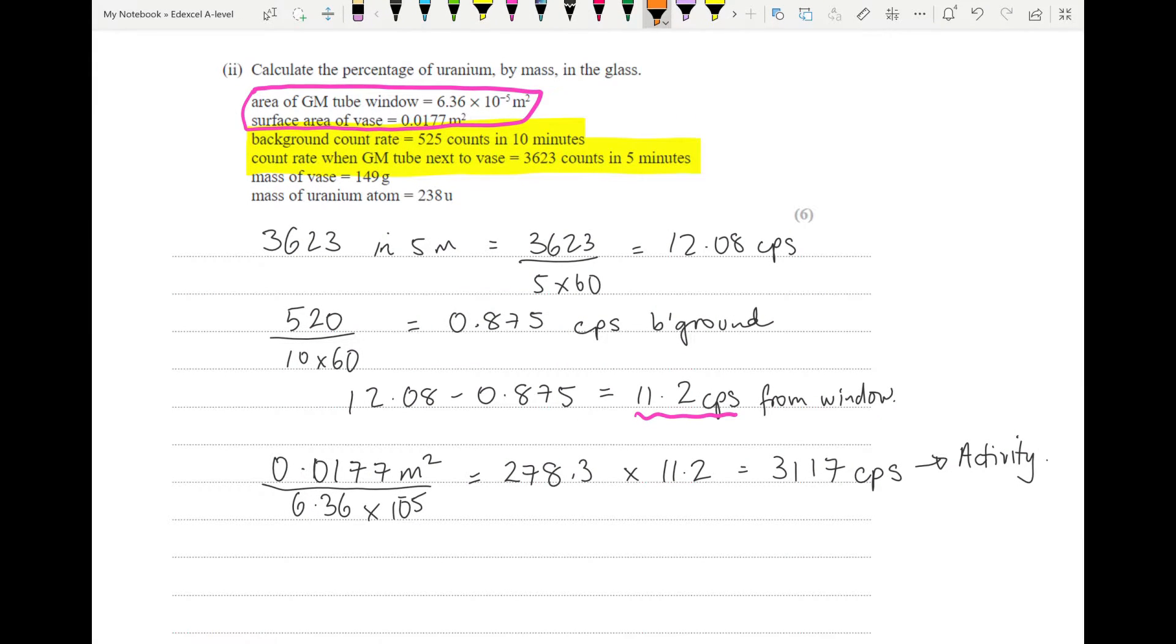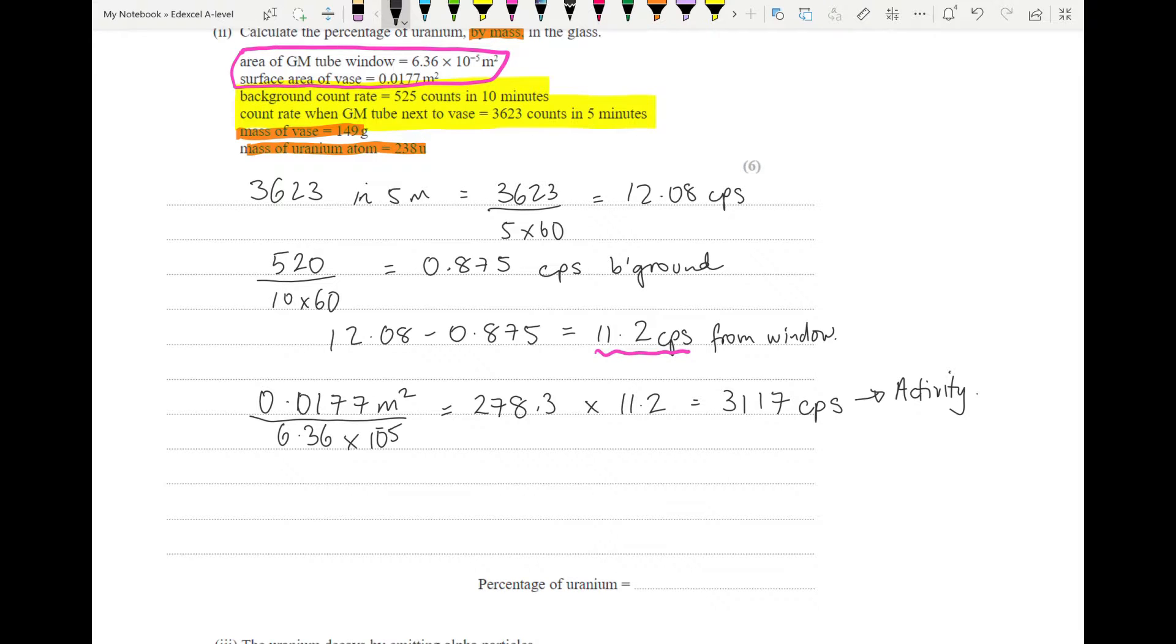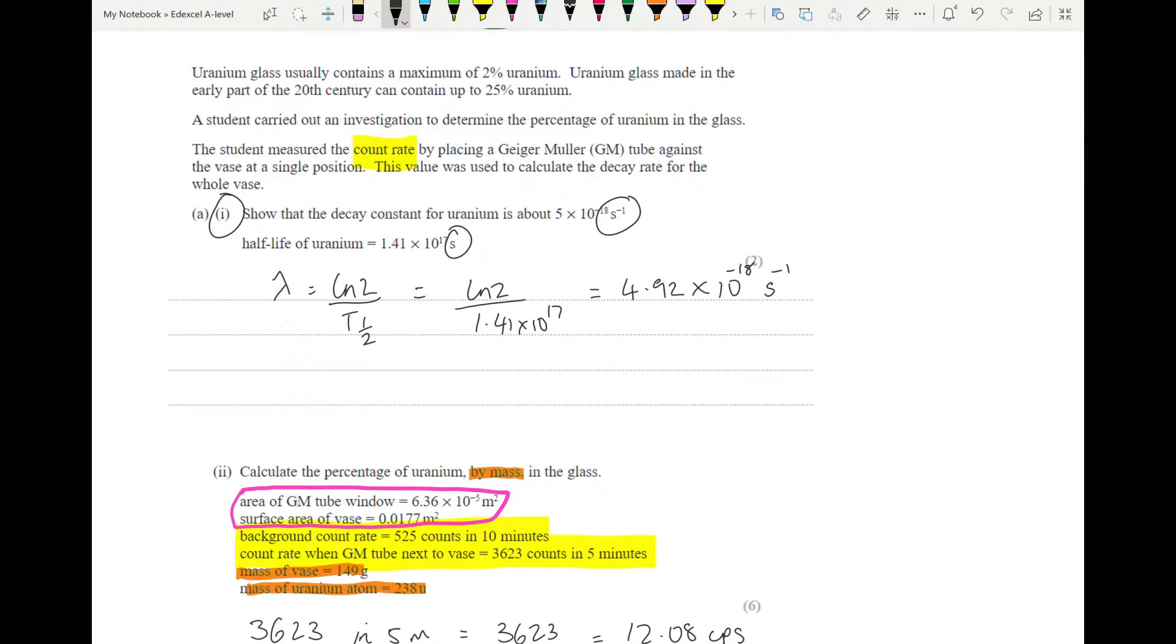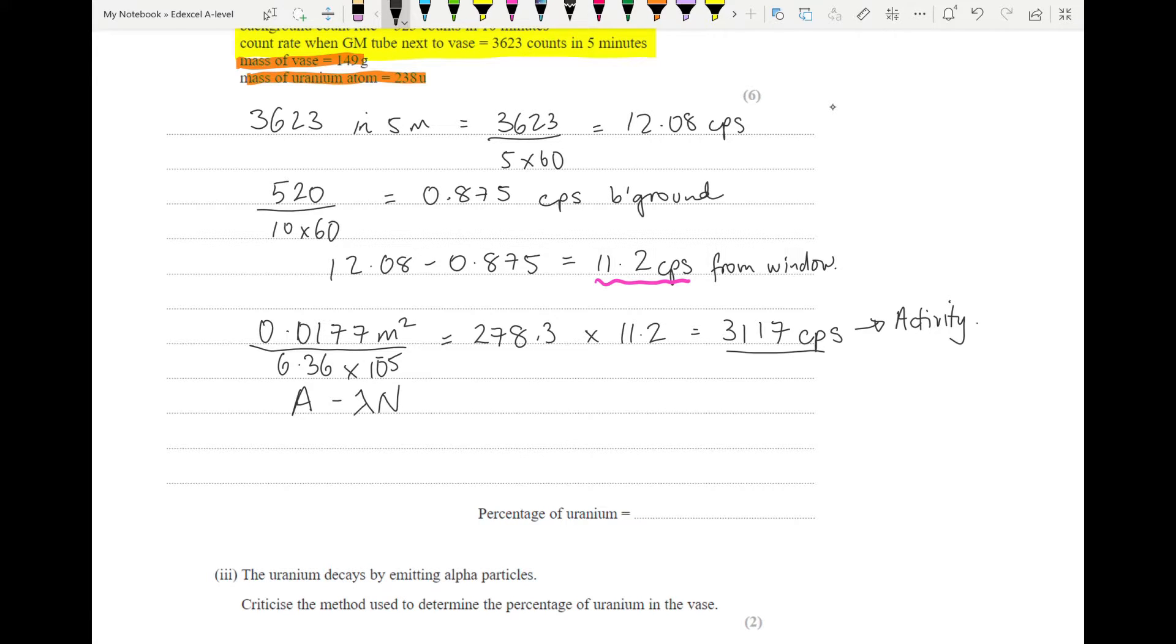We now want the percentage of uranium by mass in the glass. Well, we know that the mass of the vase is 149 grams, and the mass of one uranium atom is 238u. So first of all, we're going to see how many particles of uranium does this activity correspond to. And we have an equation in our data book to allow us to calculate that, and that says a is equal to minus lambda n. And this is where the information from the first part of this question comes in, so these two will be connected. If a is minus lambda n, then we know that 3117 is equal to minus 4.92 times 10 to the minus 18 times n, giving us an n of 6.335 times 10 to the 20. So that is our number of uranium atoms.